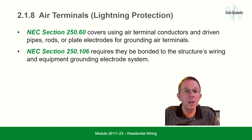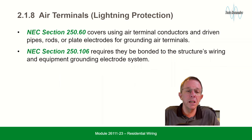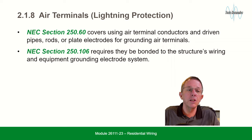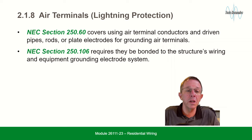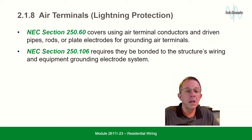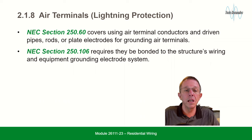Air terminals or lightning protection: NEC section 250.60 covers using air terminal conductors and driven pipes, rods, or plate electrodes for grounding air terminals. NEC section 250.106 requires that they be bonded to the structural wiring and equipment grounding electrode system.